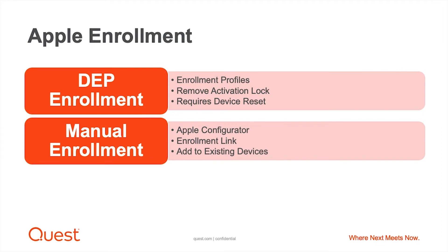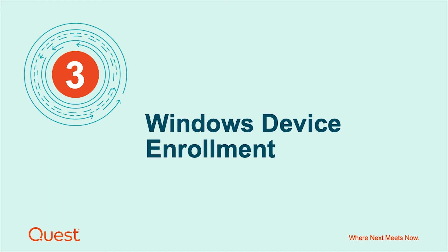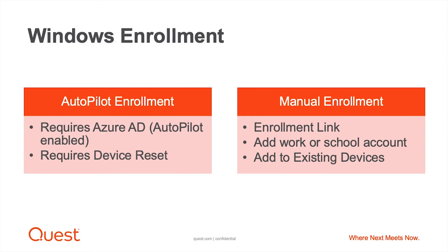Next, we'll look at Windows and how that is handled. For Windows device enrollment there are a couple of methods. One is if you have Azure AD and access to Autopilot — you can configure Autopilot to redirect any Windows 10 or Windows 11 device to be managed by KACE. You upload the serial numbers for those devices in your Microsoft account. When a user gets a device, they connect to the network, are prompted to authenticate, and any configurations you've set up in KACE Cloud MDM for your Windows device get applied to that endpoint from the get-go.